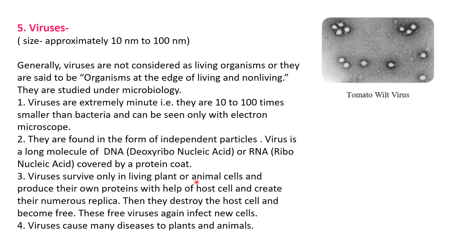Viruses survive only in living plant or animal cells and produce their own proteins with the help of the host cell, creating numerous replicas. When viruses enter a living plant or animal cell, they produce their own proteins using the host cell and increase in number. When they are large enough in number, they destroy the host cell and become free. These free viruses again infect new cells - in this way the complete body cells are destroyed one by one by these viruses.